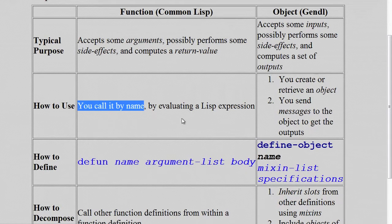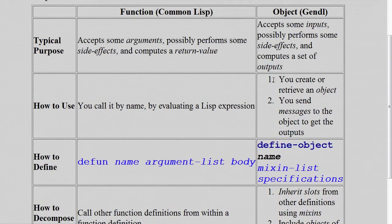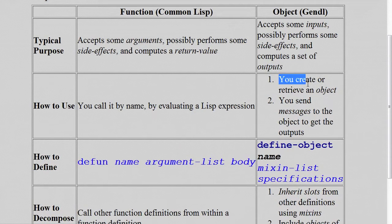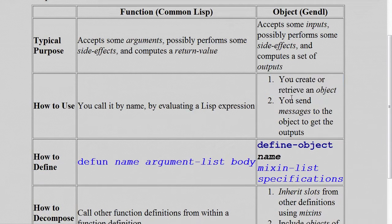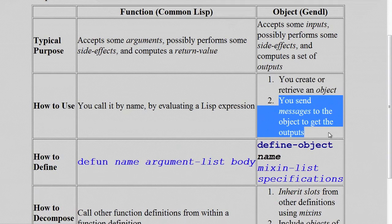For an object, you have a two-step process. First, you create an instance of the object, or get a hold of an instance somehow. Then you send messages to the object to get it to reply with some outputs. And we'll see how this works in some interaction in just a minute.